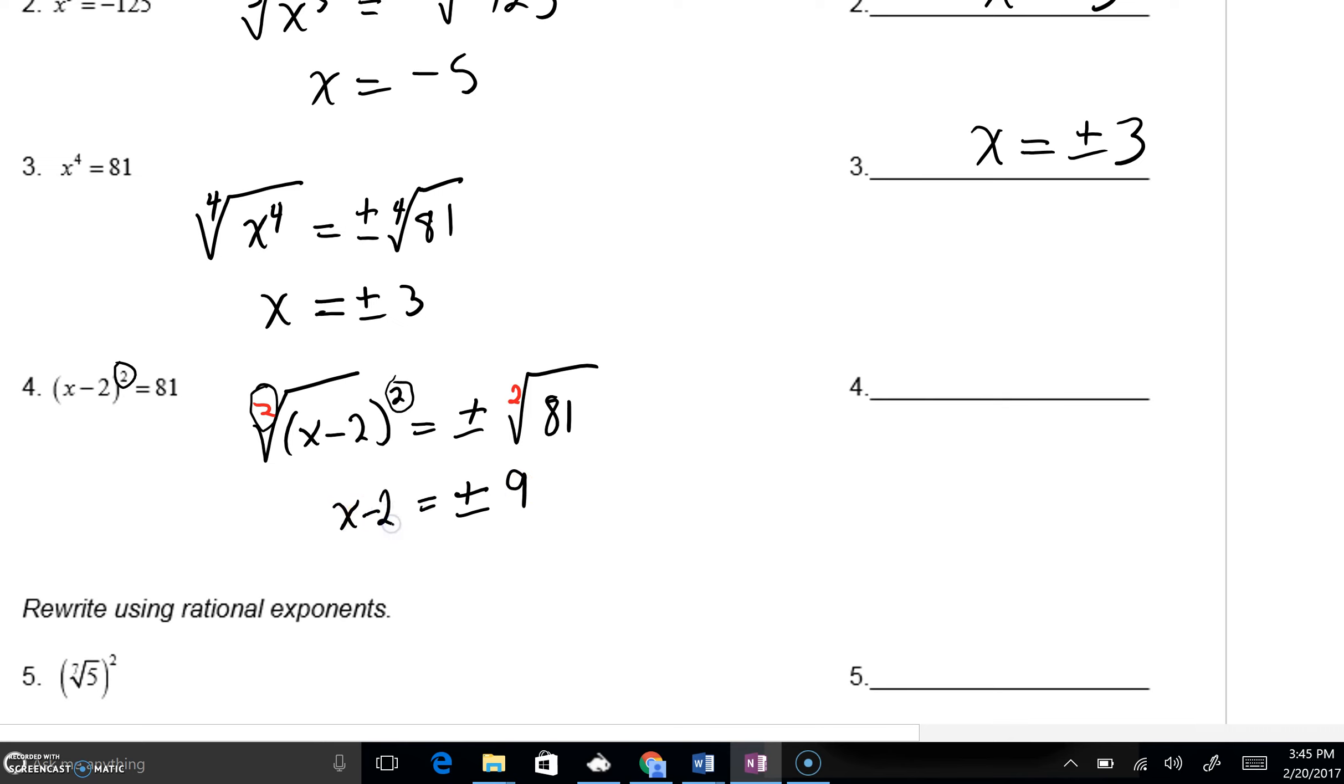And then, on this left-hand side, we have x minus 2. Please understand, though, that this really means that x minus 2 could equal positive 9. And, as we solve, we add a 2. We'd get x equals 11.